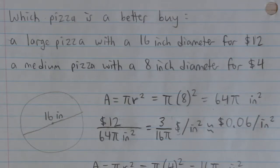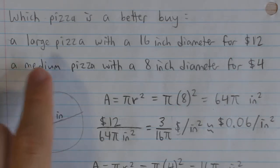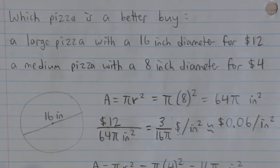In this question we are given two pizza options, a large and a medium, and we have to figure out which one is the better buy - meaning which one gives you the most pizza for the least amount of price. The large pizza has a 16 inch diameter for $12 and a medium pizza has an 8 inch diameter for $4.